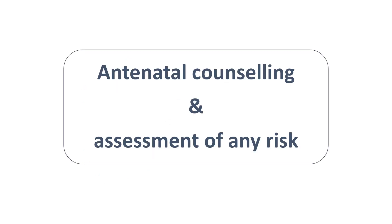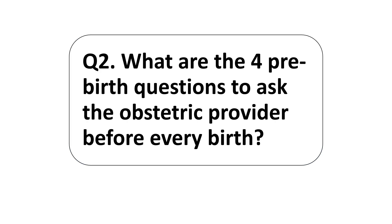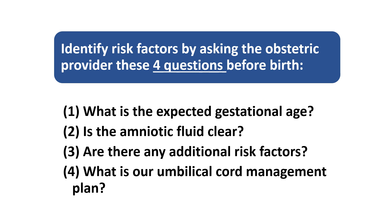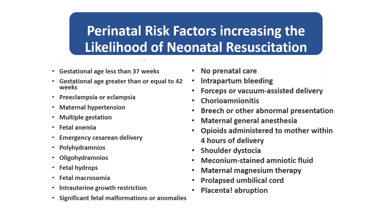For antenatal counseling and assessment of risk factors, we should ask the obstetrician four things before birth: what is the expected gestational age of the baby, is the amniotic fluid clear or not, are there any additional risk factors in the mother, and what is our umbilical cord management plan. After assessing risk factors, we should do antenatal counseling of the relatives, and if possible of the mother and father.